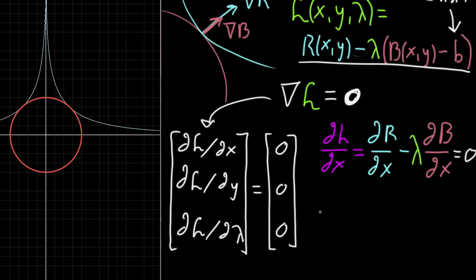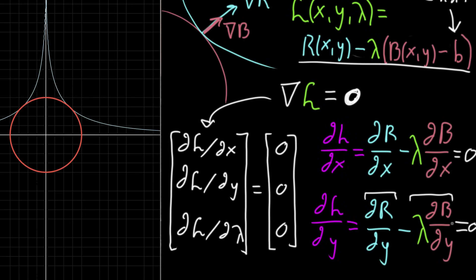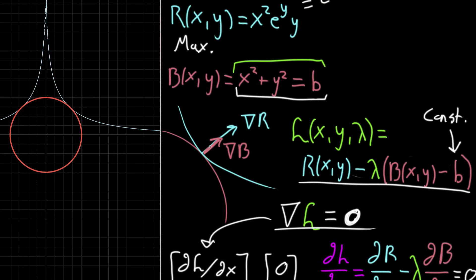If we take the partial derivative of the Lagrangian with respect to y, it looks very similar: it's the partial derivative of R with respect to y, minus lambda — which looks like a constant as far as y is concerned — times the partial derivative of B with respect to y. Setting that equal to zero is the same as setting the partial of R with respect to y equal to lambda times the partial of B with respect to y — the second equation we've seen in these examples where we set one gradient vector proportional to the other.